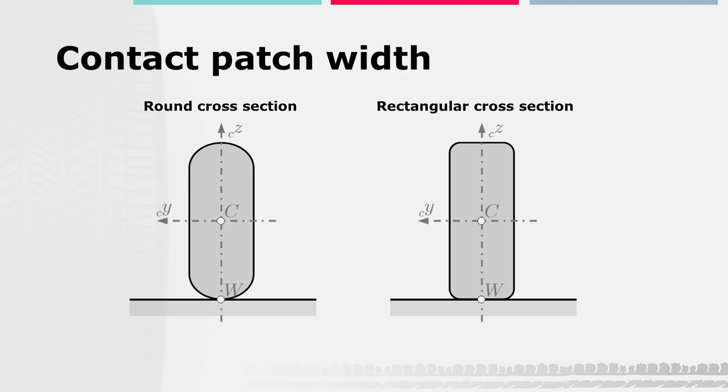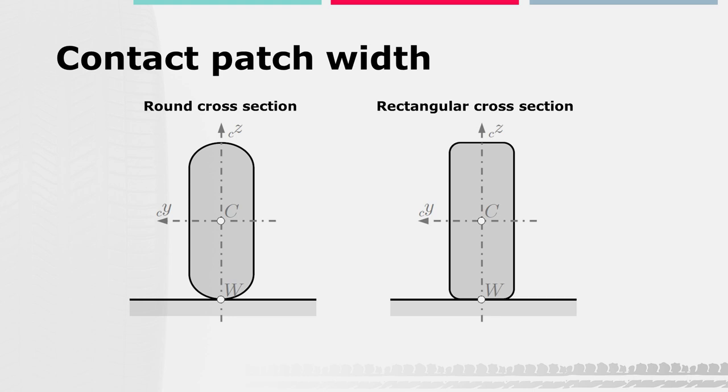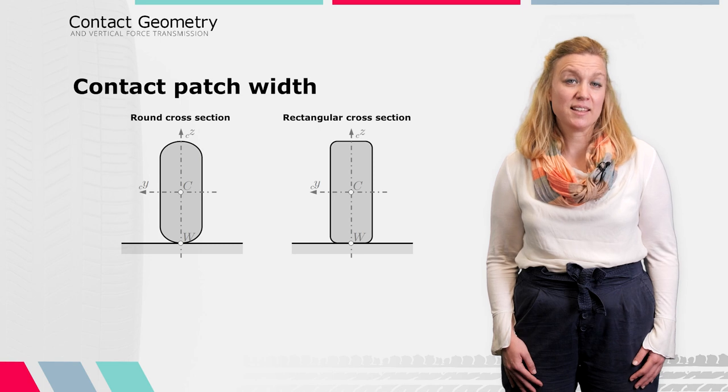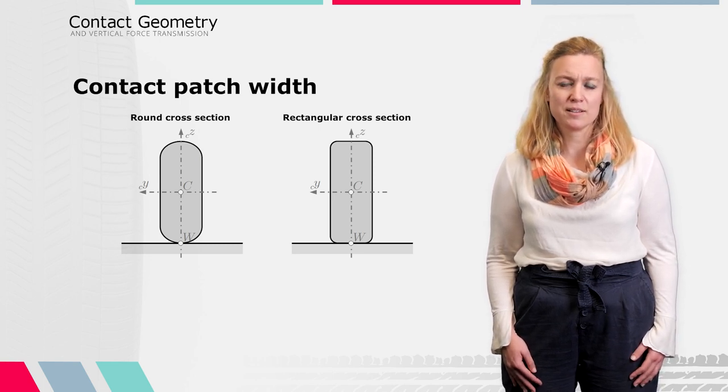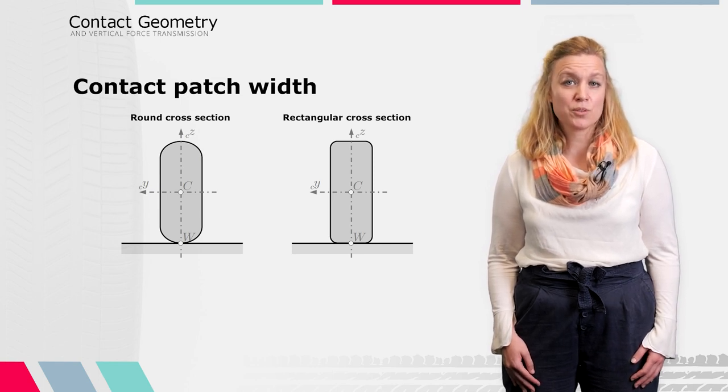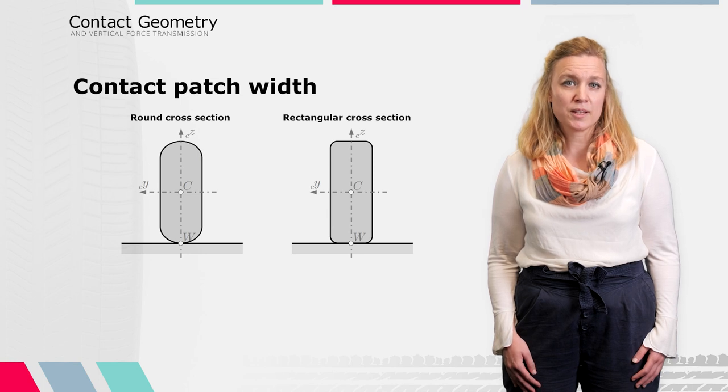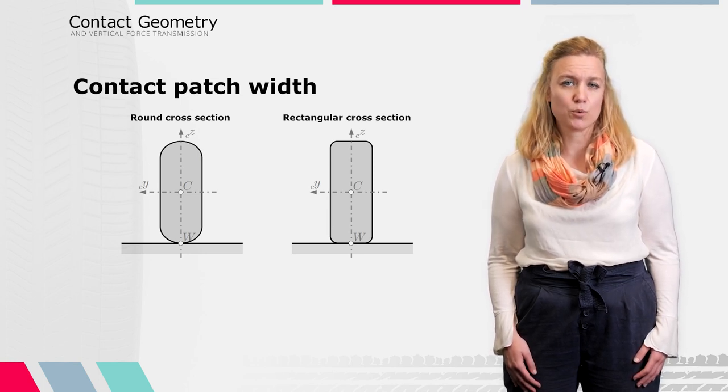Motorcycle tires, on the other hand, typically have a rounder cross section. The main reason for this is that they can and usually will be driven at significantly higher camber angles than passenger or truck tires. Compared to the rectangular shape, the width of the contact patch changes more for a rounded tire with a changing vertical force.